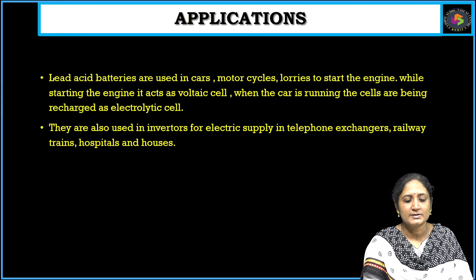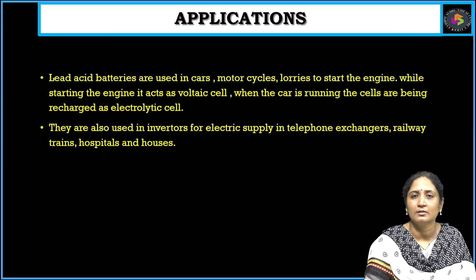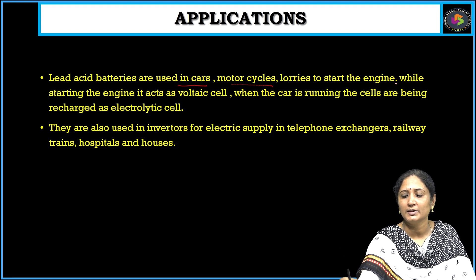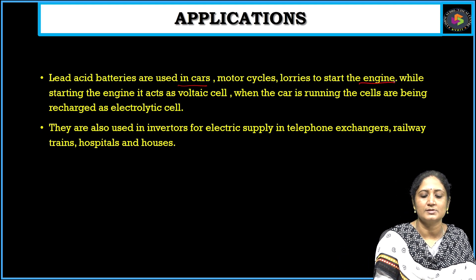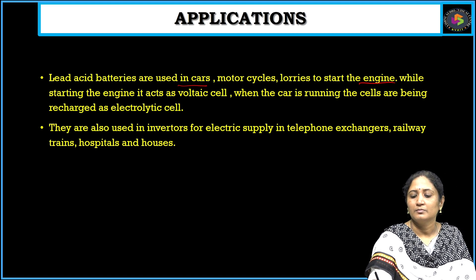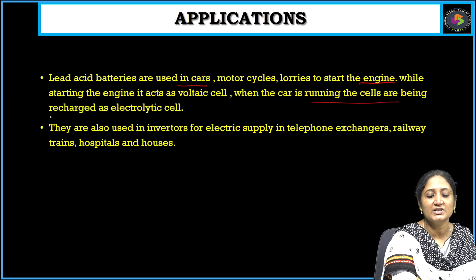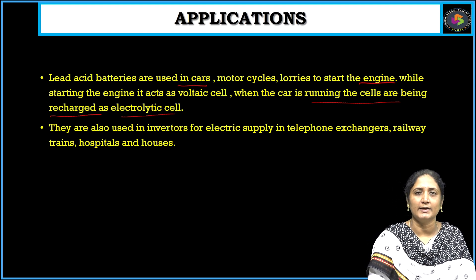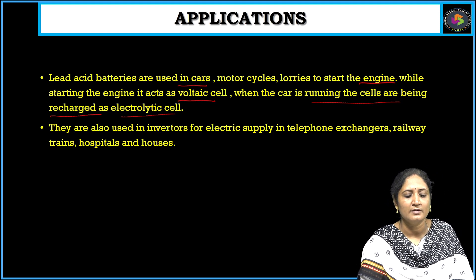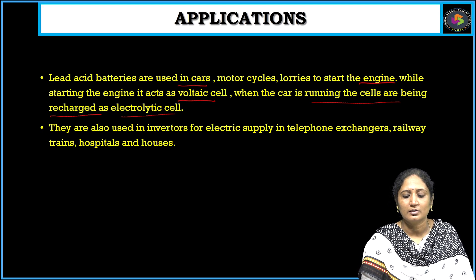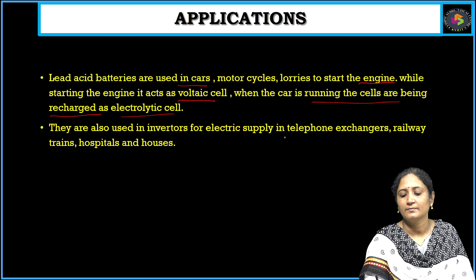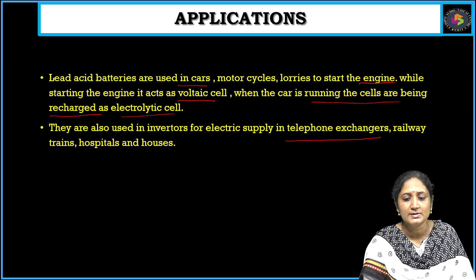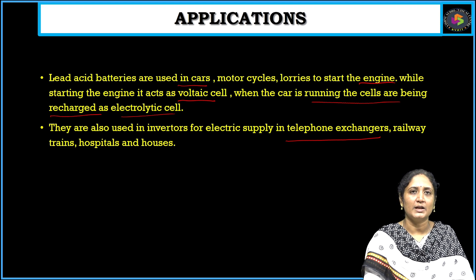Coming to the applications of lead acid batteries: these batteries are mostly used in cars, motorcycles, lorries, and mechanical engines. When the car is running, the cells are being recharged as an electrolytic cell; while discharging, it acts as a voltaic cell. These cells are also used in telephone exchanges, railway trains, hospitals, houses, and many household applications. This is about the lead acid battery. Thank you.